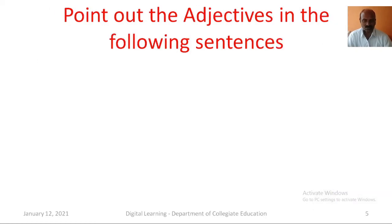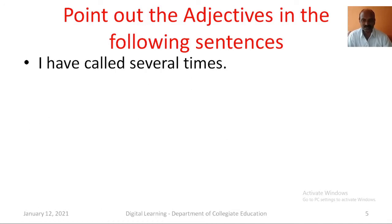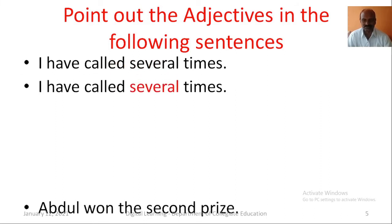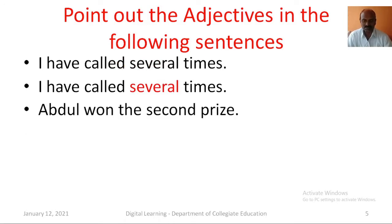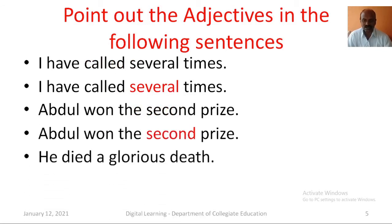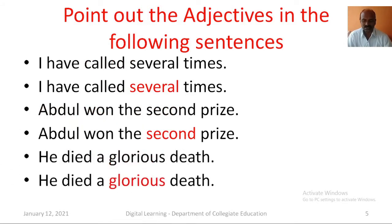Now I will show some other sentences. Please point out adjectives in these sentences. I have called several times — in this sentence, several is the adjective. Abdul won the second prize — in this sentence, second is the adjective. He died a glorious death — in this sentence, glorious is the adjective.